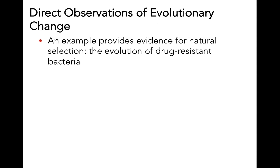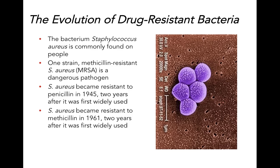We do have direct observations of evolutionary change. We know that drug-resistant — specifically antibiotic-resistant — bacteria have evolved. Microbiologists have been able to collect cultures of different pathogenic bacteria and preserve them. Throughout the history of microbiology, we can compare strains of bacteria cultured from human diseases and track when we see antibiotic-resistant strains.